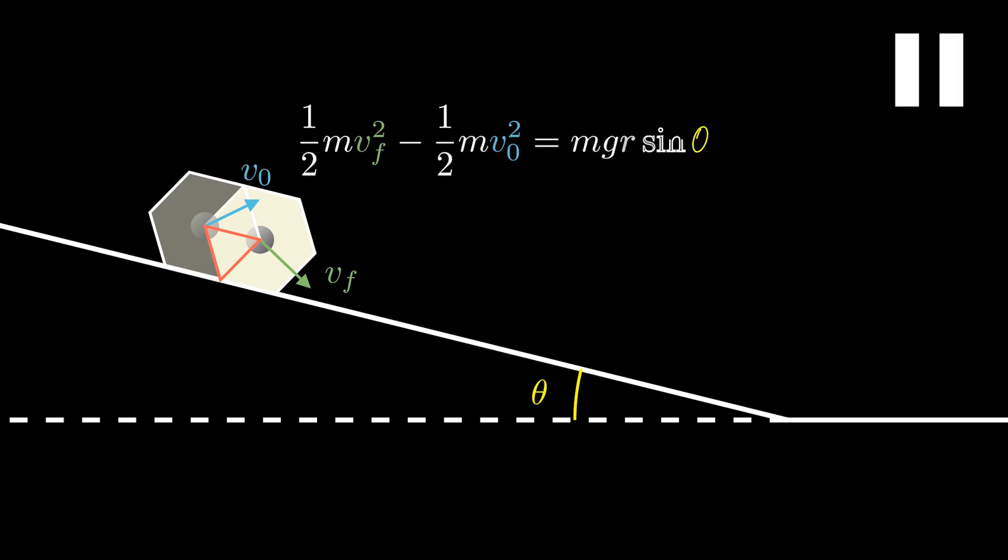Thus, we can write that 1/2 m vf squared, the velocity just before the next collision, minus 1/2 m v0 squared is equal to mgr sin theta.